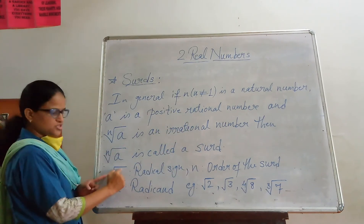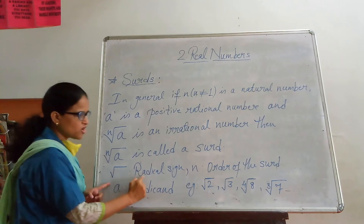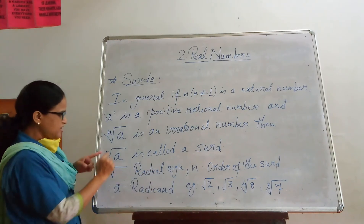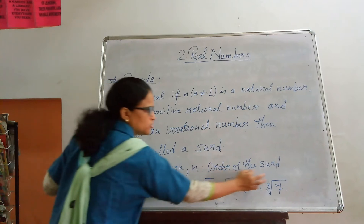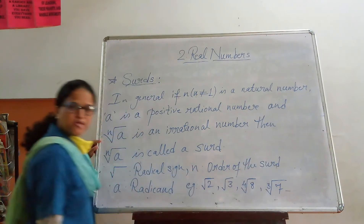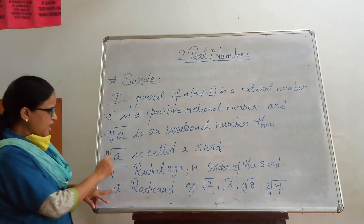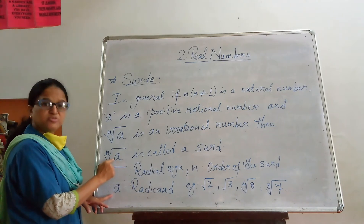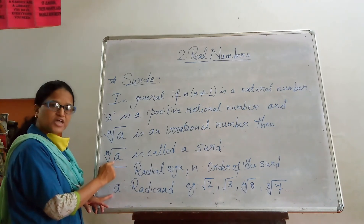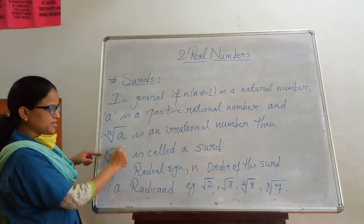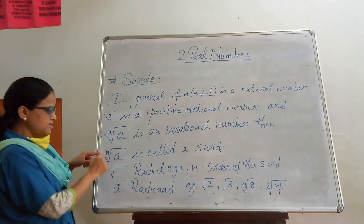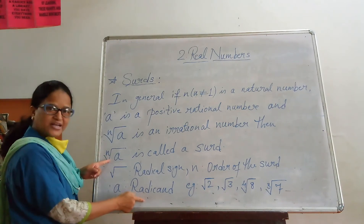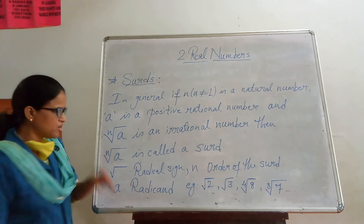Here, this root sign is called the radical sign. And this N means the order of the surd. And A is the radicand, meaning the positive rational number under the radical sign.